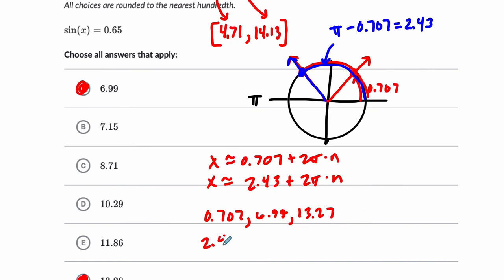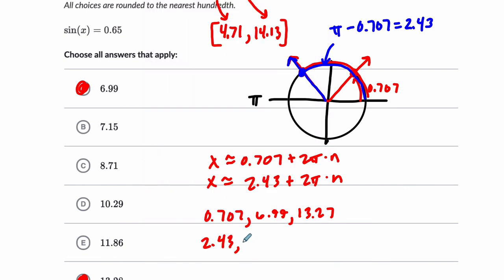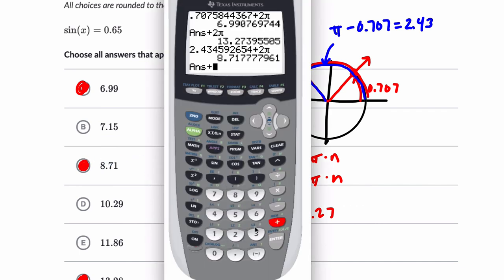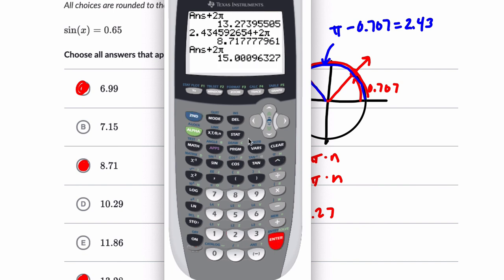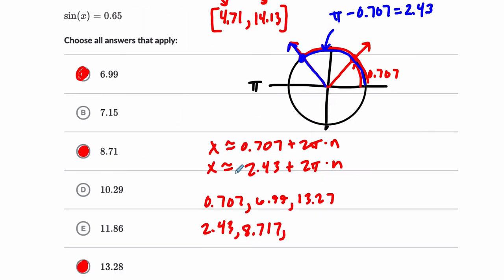I see that choice right here. Then plus 2π again, we get 15 on the dot, which is too big. So we stop there. These are our three answers that would work. Let's finish off with a quick one. Sometimes you get lucky with problems like this.